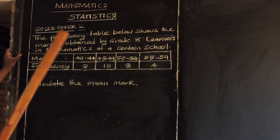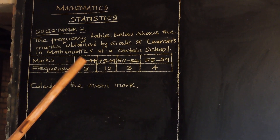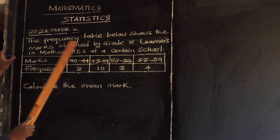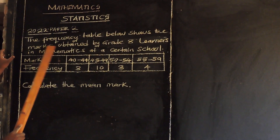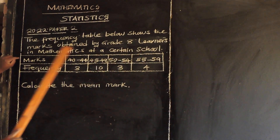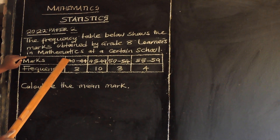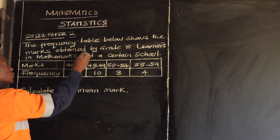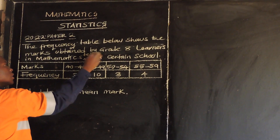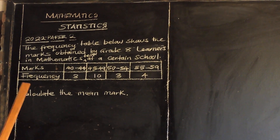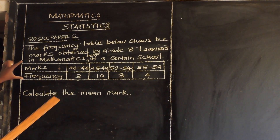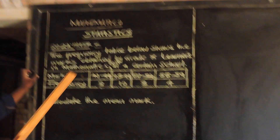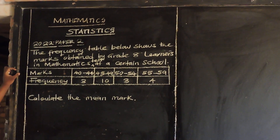Okay, so let us look at 2022, a question on statistics. It's saying the frequency table below shows the marks obtained by Grade 8 learners in mathematics tests at a certain school. So this table is showing the marks obtained by Grade 8 learners at a certain school in mathematics tests.